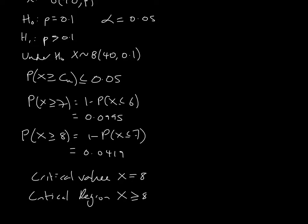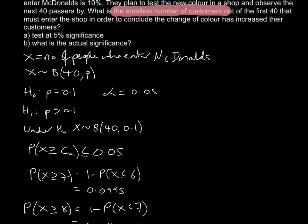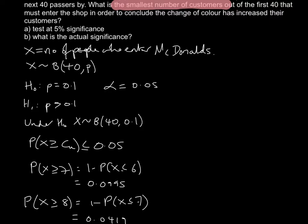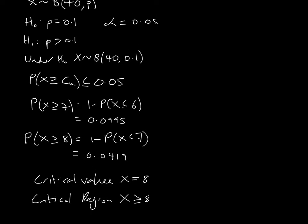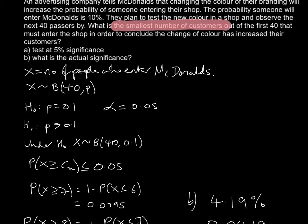Going back to the original question, it also asks what is the actual significance. The actual significance is the actual probability of this happening — the probability of McDonald's concluding there's been a change when X is greater than or equal to 8. That is the probability of 0.0419, meaning this will only happen 4.19% of the time. So 4.19% is the actual significance, and it's normally written as a percentage because the significance level is given to us as a percentage.